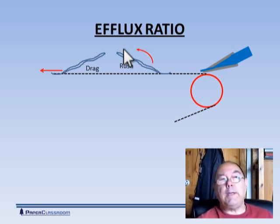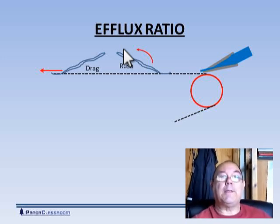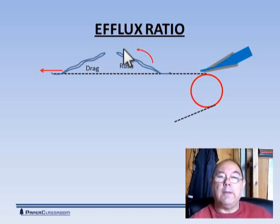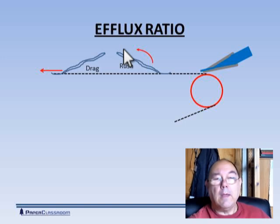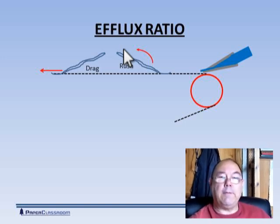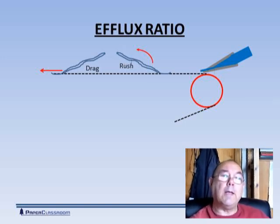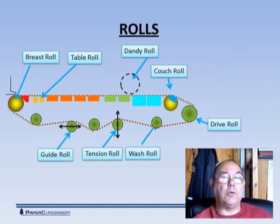This is where the term square comes from. When the properties of a sheet in the machine direction are the same as the properties of the sheet in the cross-direction then we say this is a square sheet. So I hope that takes care of the efflux ratio for you. Let's move along now to the rolls.